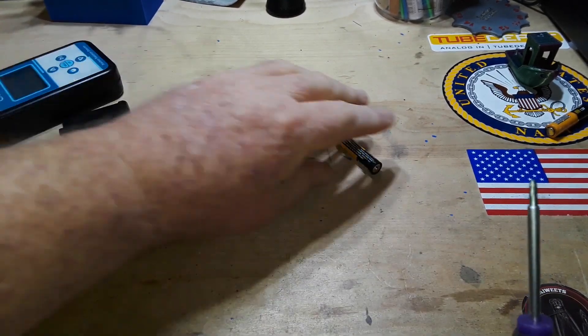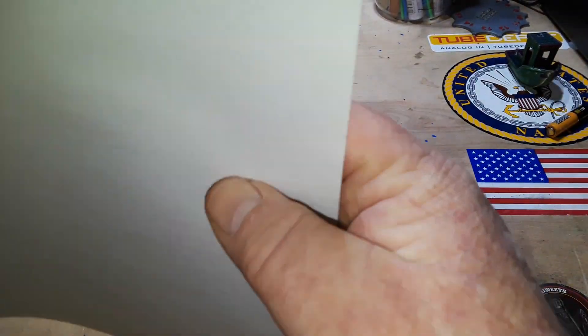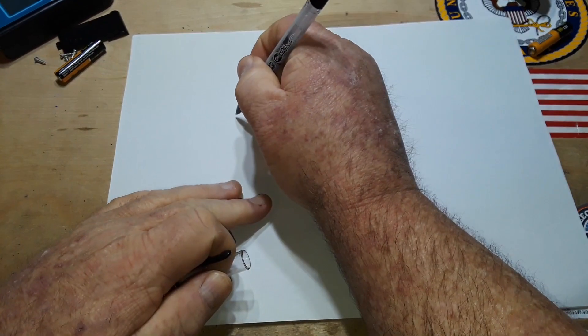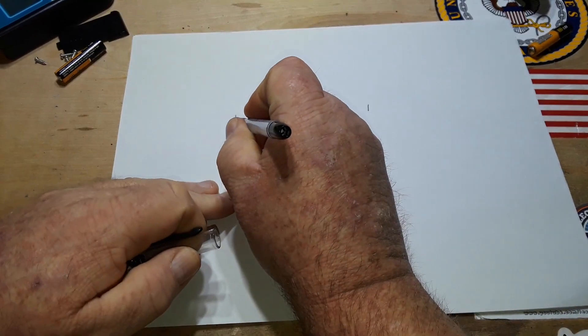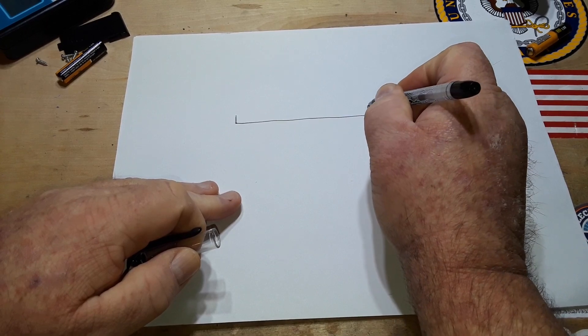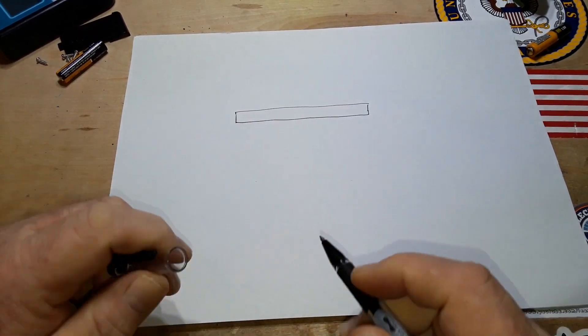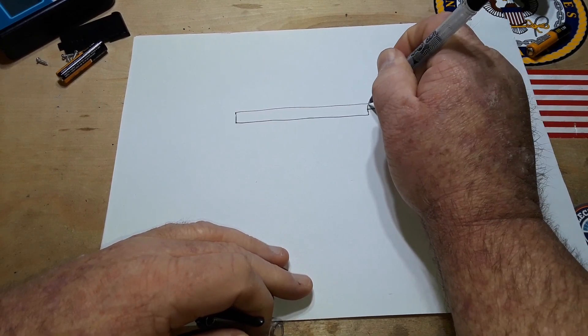So, let me move this stuff out of the way here and bring in a high-tech educational device known as a piece of paper. All right. So, let's draw. So this will be our tube.